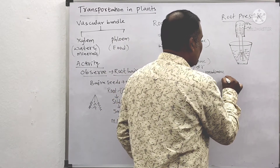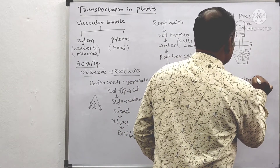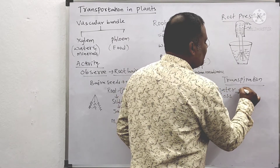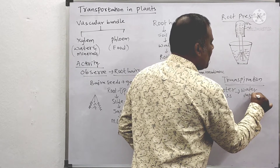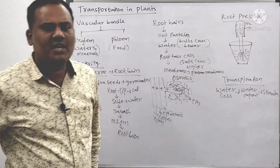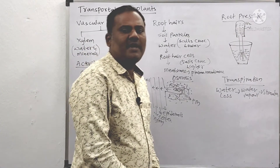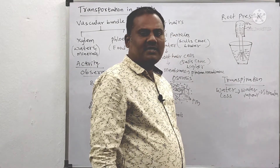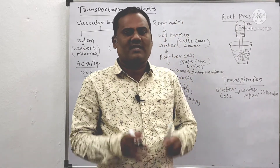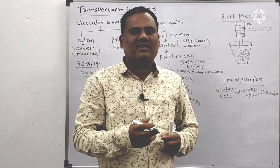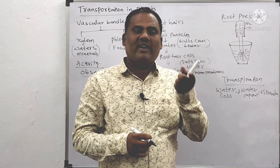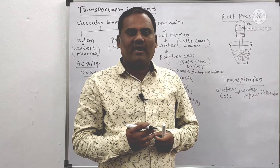And the next topic is transpiration. Transpiration is the loss of water from the leaves in the form of water vapour through stomata. A simple childhood activity: you take a potted plant, cover two or three leaves with a transparent cover and keep it in sunlight. Water vapour will form on the transparent cover — this shows that water is being lost from the leaves. That process is called transpiration.